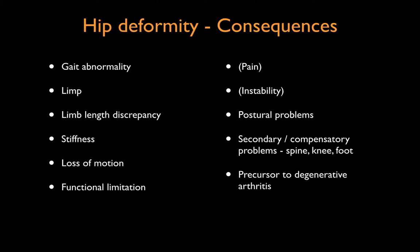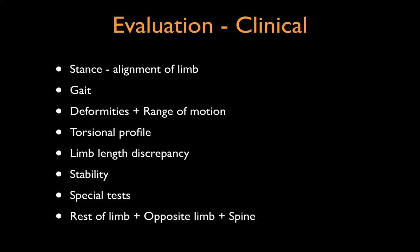Any hip deformity including coxa vara presents with gait problems and restricted range of motion. Pain and instability are usually absent in coxa vara unless there are secondary problems — instability occurring only when associated with dysplasia from DDH treatment. They usually present with painless limp unless there are secondary complications.